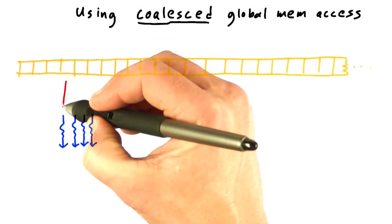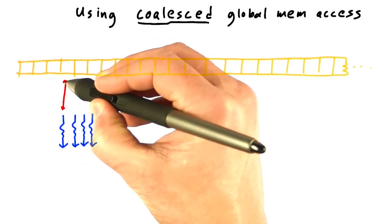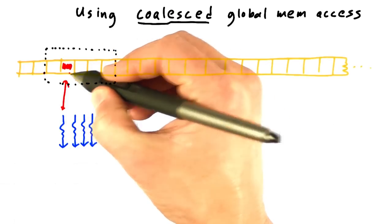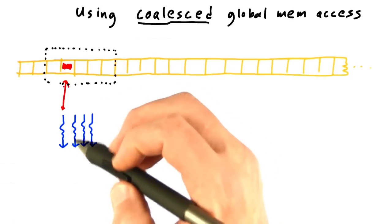Whenever a thread on the GPU reads or writes global memory, it always accesses a large chunk of memory at once, even if that thread only needs to read or write a small subset of the data in that large chunk.